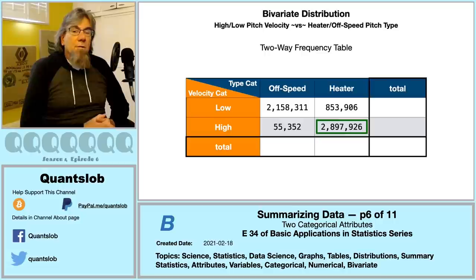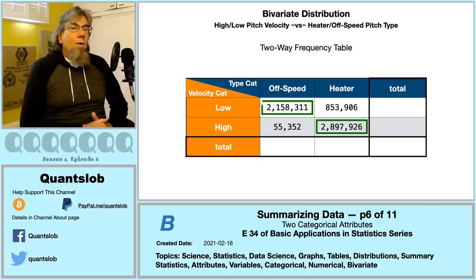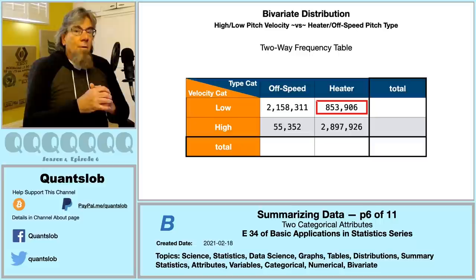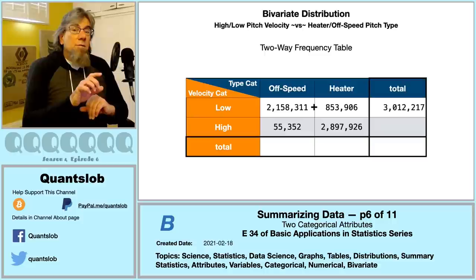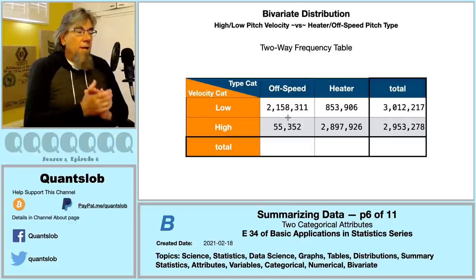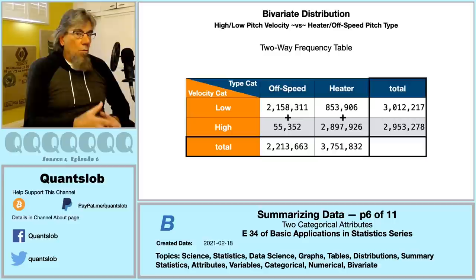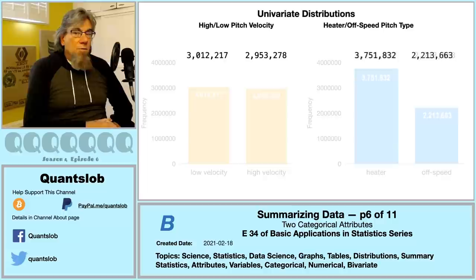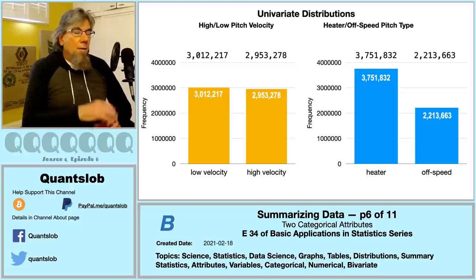From the contingency table, we can see that very close to 2.9 million pitches are recorded as both high velocity and heater. Note that a heavy preponderance of cases are on the diagonal — which is what we'd expect. However, there are counterexamples: over 850,000 pitches had low velocity and yet are classified as heaters. For each row we can sum frequencies to obtain row totals, and likewise for columns. The row and column totals are what we saw in our respective univariate distributions — these totals are often called marginals, because they appear in the margins of the table.